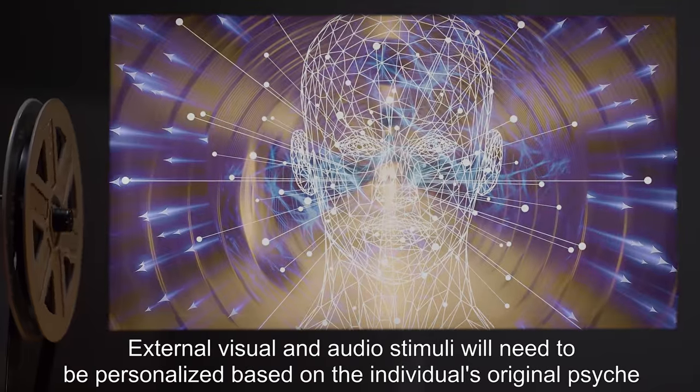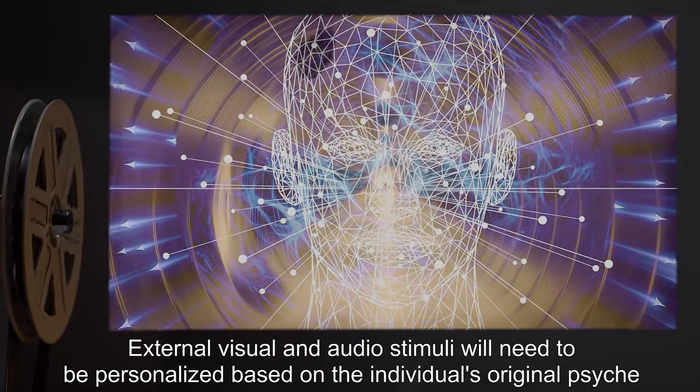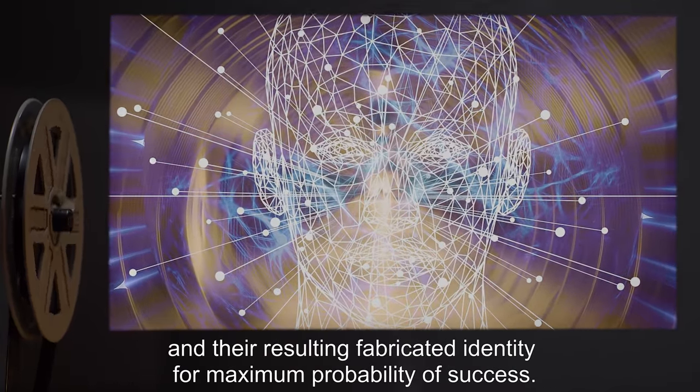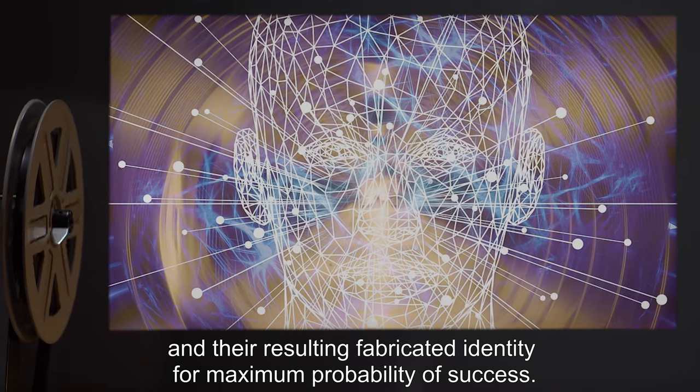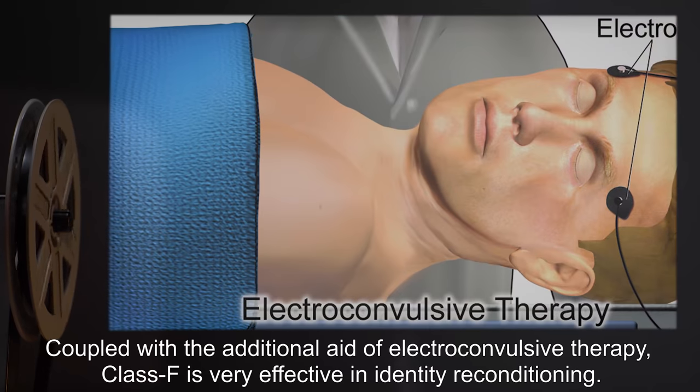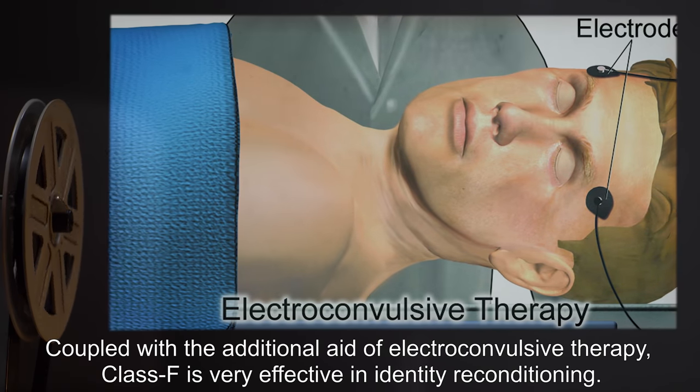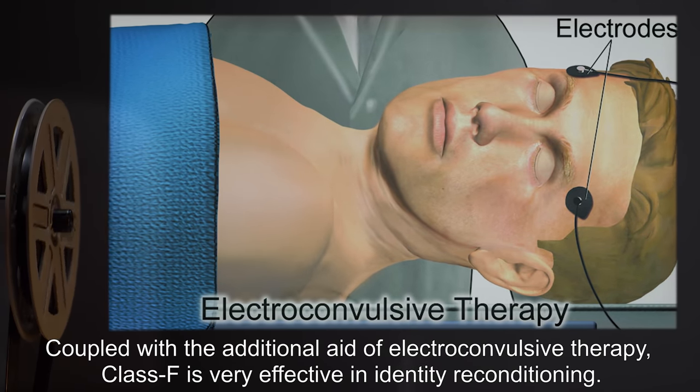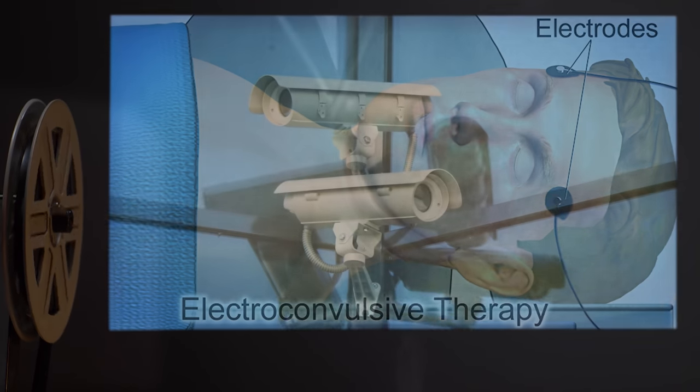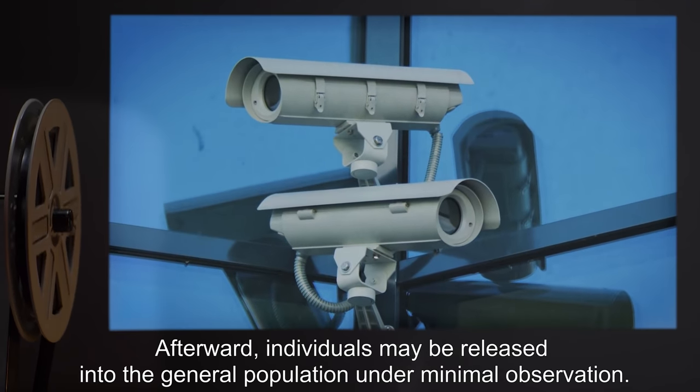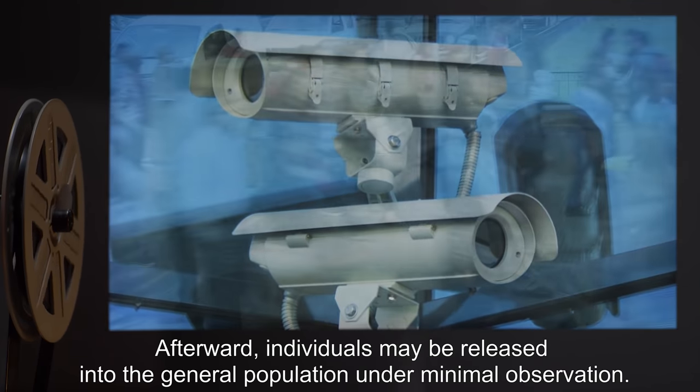External visual and audio stimuli will need to be personalized based on the individual's original psyche and their resulting fabricated identity for maximum probability of success. Coupled with the additional aid of electroconvulsive therapy, Class F is very effective in identity reconditioning. Afterward, individuals may be released into the general population under minimal observation.